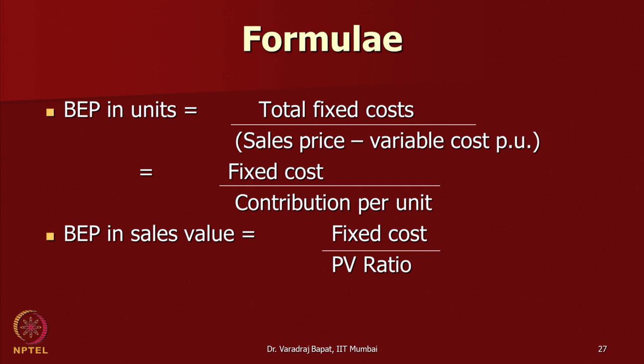We know how many units we need to sell to recover the fixed cost — that is the break-even point. Many times it is difficult to have per unit contribution data, so instead of contribution per unit we divide by PV ratio. The formula of PV ratio is contribution divided by sales. As a percentage, that margin is our PV ratio. We divide fixed cost by PV ratio to get BEP in sales value.